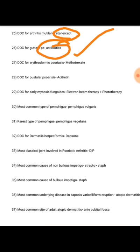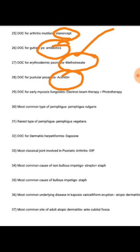Four different drugs of choice for psoriasis subtypes: pustular psoriasis — acitretin; erythrodermic psoriasis — methotrexate; guttate psoriasis — antibiotics; arthritis mutilans — etanercept.